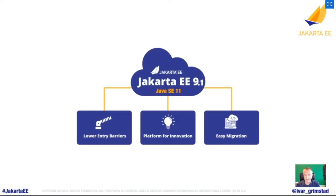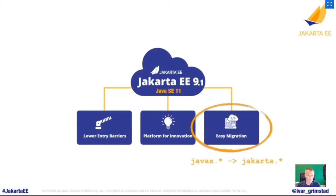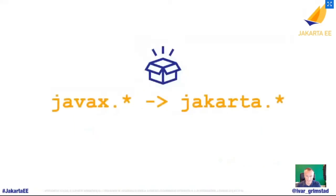As mentioned earlier, we had three focus areas: lower the entry barriers — basically remove all unnecessary stuff; make it a platform for innovation, giving a good starting point for future Jakarta work; and make migration easy. The migration is all about the javax to jakarta namespace change — that's the major thing, and it's actually the only thing delivered in 9.0.1.